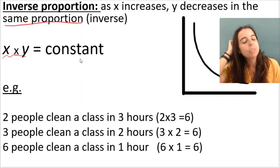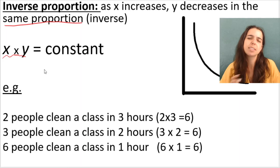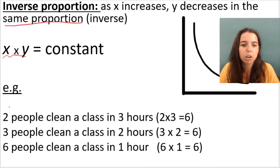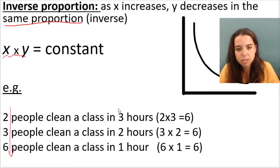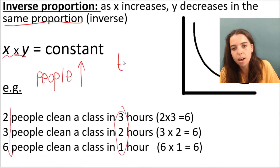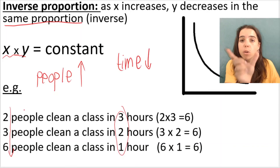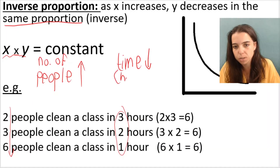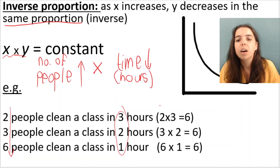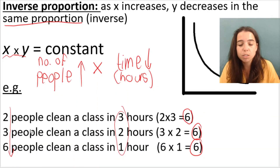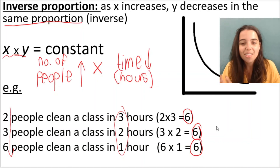Here's an example. Remember I said it's often people doing a job and the time it takes — it's a very common example. Two people clean a class in three hours. If I increase the number of people, so I go from 2 to 3 to 6, look what happens to the time — it's going down. The people are going up; the time is going down. And if I multiply those two variables together — number of people and time in hours — I get six in every single case. Six is my constant: 2 times 3 is 6, 3 times 2 is 6, 6 times 1 is 6. That is inverse proportion.